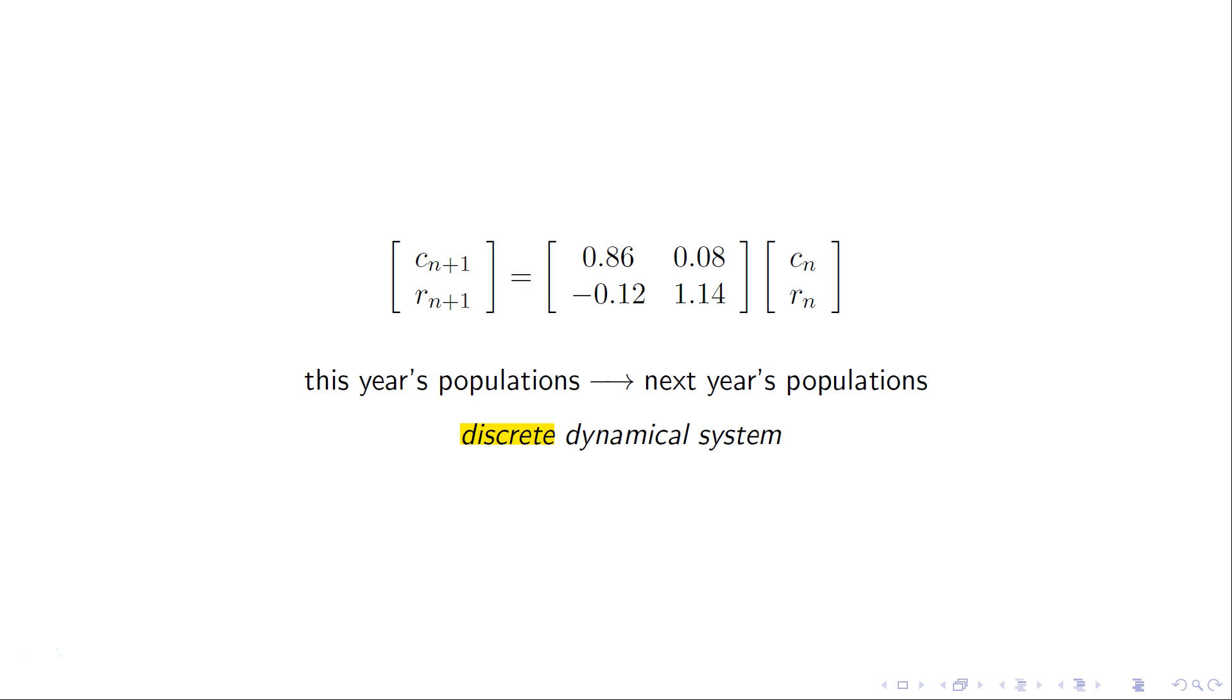We're stepping ahead by a whole number every time. This is this year's population. And then we step ahead by a whole year to get next year's population. That's what discrete means.